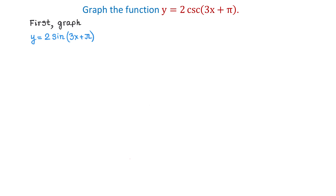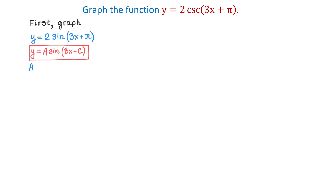We will start by graphing y equals 2 sine of 3x plus pi. This function has the form y equals a sine of bx minus c. In our function, a is 2, b is 3, and c is negative pi. This is because if we write 3x plus pi as 3x minus negative pi, then c is going to be negative pi.